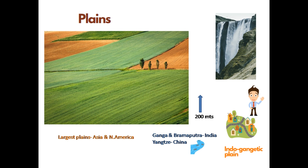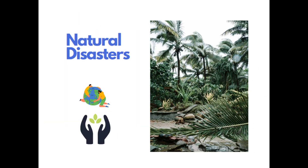The largest plains in India are formed with the deposits of rivers Ganga and Brahmaputra. Similarly, plains in China are formed with the deposits of river Yangtze. Plains are very fertile and largely suited for agriculture. Human settlements are large here as transportation and housing are easy. The densely populated Indian plain is the Indo-Gangetic Plain, formed with the deposits of rivers Ganga and Indus.